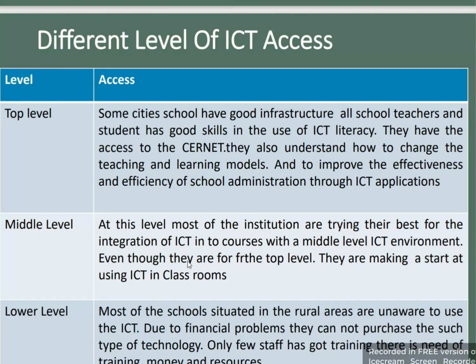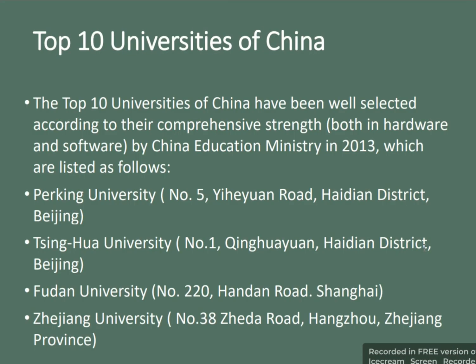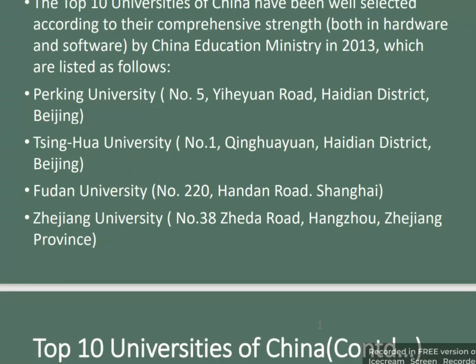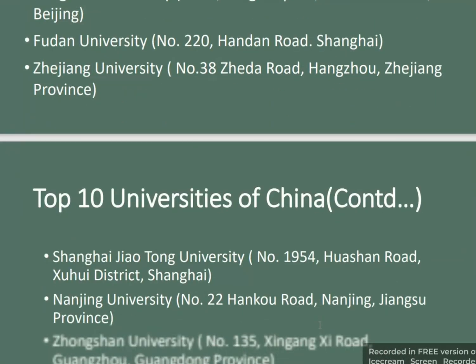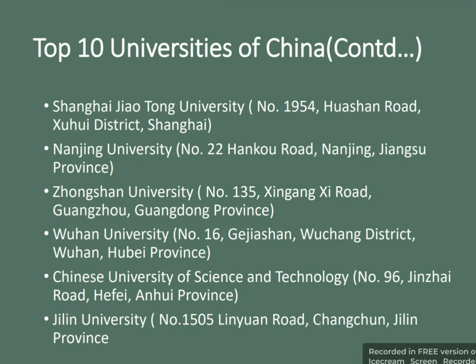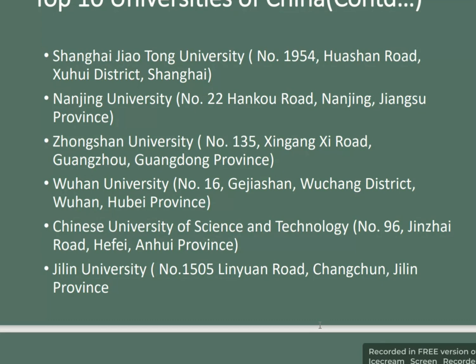The top 10 universities of China were selected according to their comprehensive strengths in both hardware and software by China's Education Ministry in 2018. They are: Tsinghua University (No. 1), Peking University (No. 5), Fudan University (No. 220), Zhejiang University (No. 38), Shanghai Jiao Tong University, Nanjing University, Zhejiang University, Wuhan University, University of Science and Technology of China, and Jilin University.